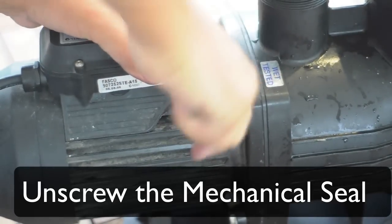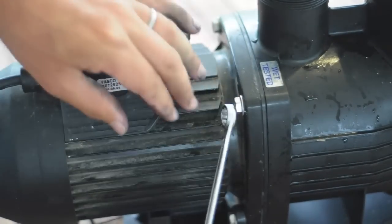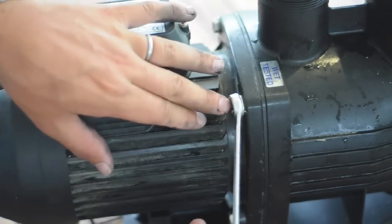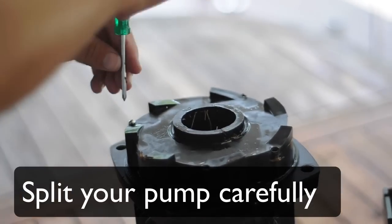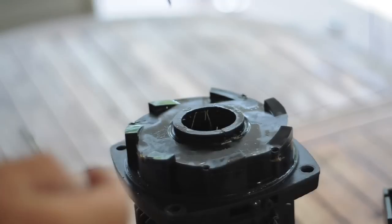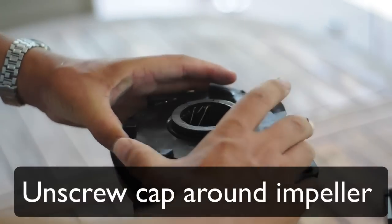Next step, we want to unscrew the bolts from the mechanical seal set on the side. Then we split open the pump and carefully detach and unscrew the cap around the impeller.